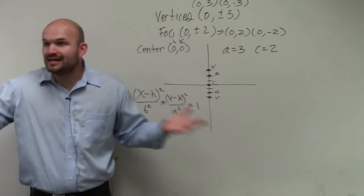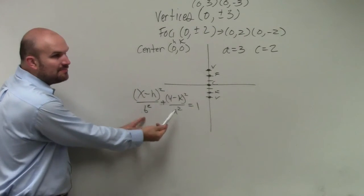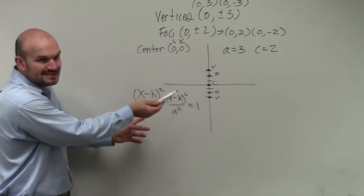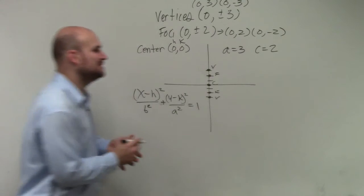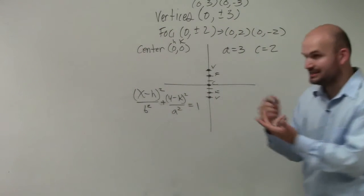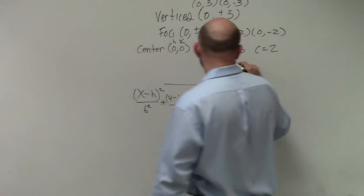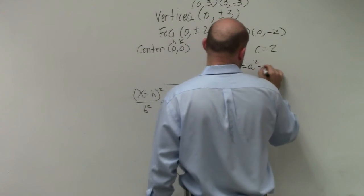All right? Now, again, I need to find b. The equation has a and b. I don't have b. I don't really need c. But c is helpful because if I have a and c, there is an equation c squared equals a squared minus b squared.